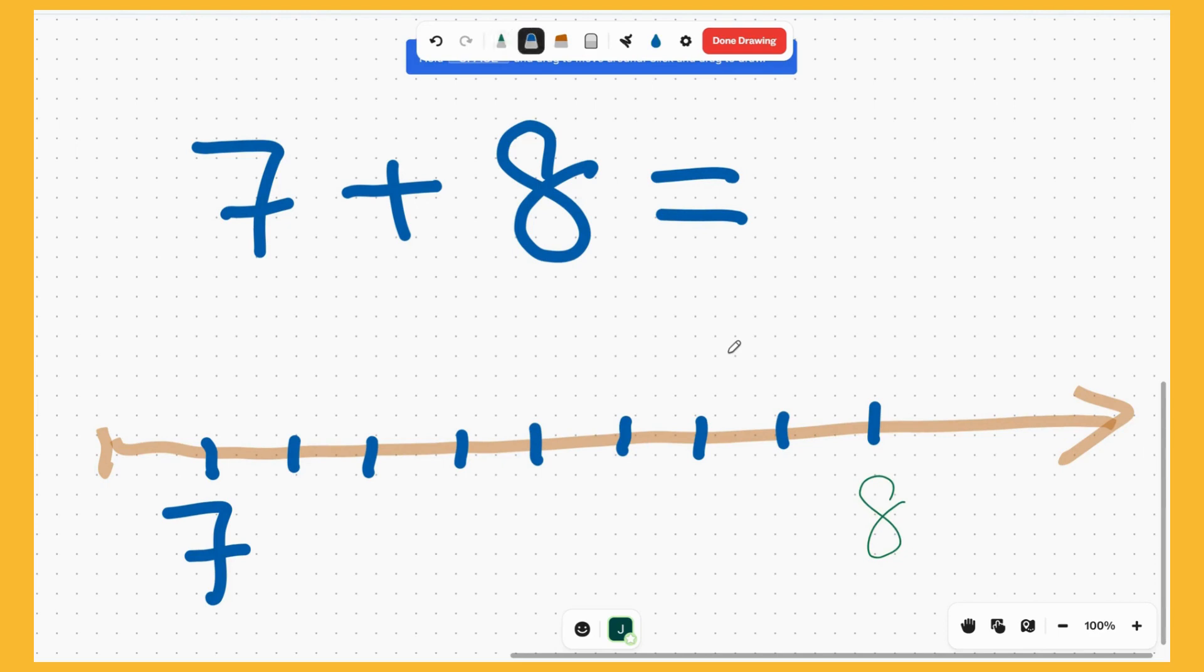So again, let's do the counting starting from 7. We mark here. So 8, 9, 10, 11, 12, 13, 14, 15.